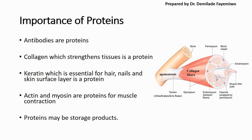Collagen is also a protein and it strengthens tissues — you may have heard that taking collagen makes your skin look young and plump because it reduces signs of aging. Keratin is another protein found in hair, nails, and the skin surface layer. Actin and myosin are proteins in muscles, discussed in more detail in chapter 15 on muscle contractions. Proteins can also be storage products, but we don't go into detail about that in this syllabus.